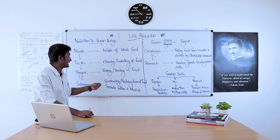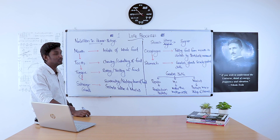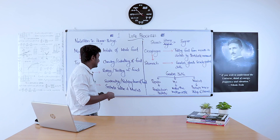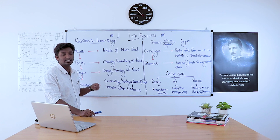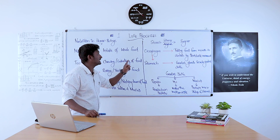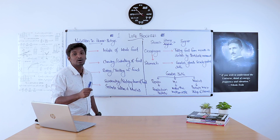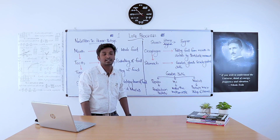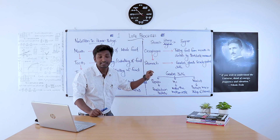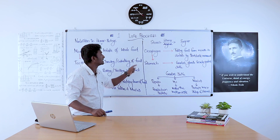Salivary glands are glands present inside our mouth. Their function is swallowing or pushing down of food, and they secrete saliva plus mucus. This saliva contains an enzyme called salivary amylase, which helps to convert starch into sugar. So digestion starts from the mouth itself.